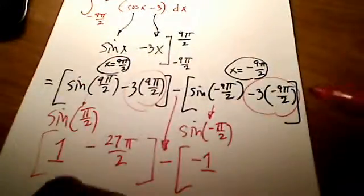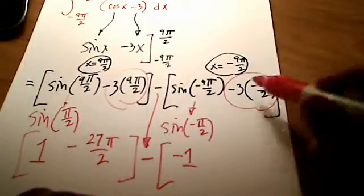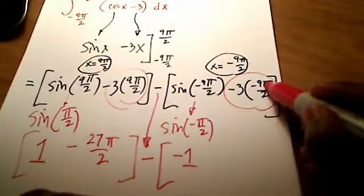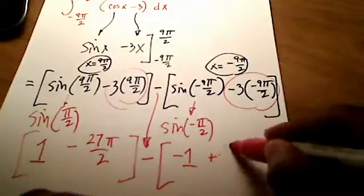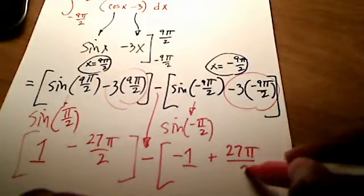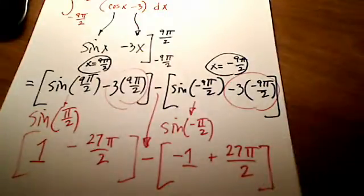Likewise, here I'm just going to bring that minus sign on down. Likewise, for this one here, I've got a negative 3 times a negative 9 in the numerator. So that's a positive 27π all over 2. OK,